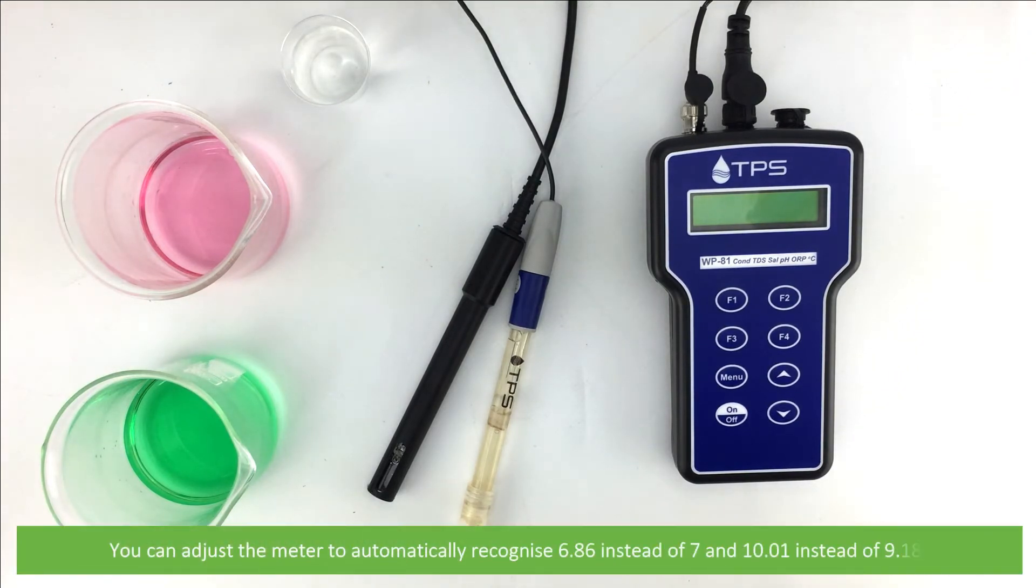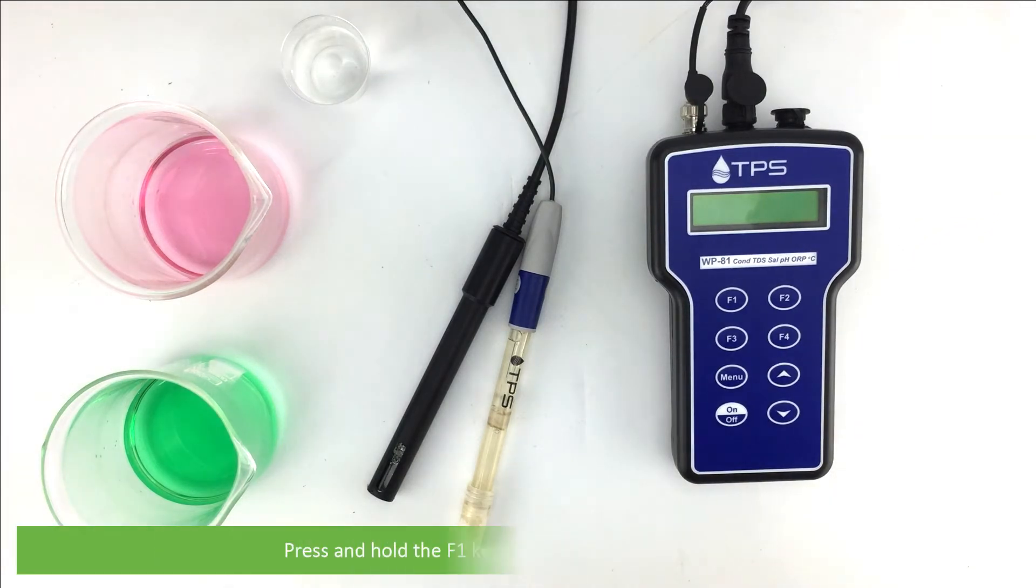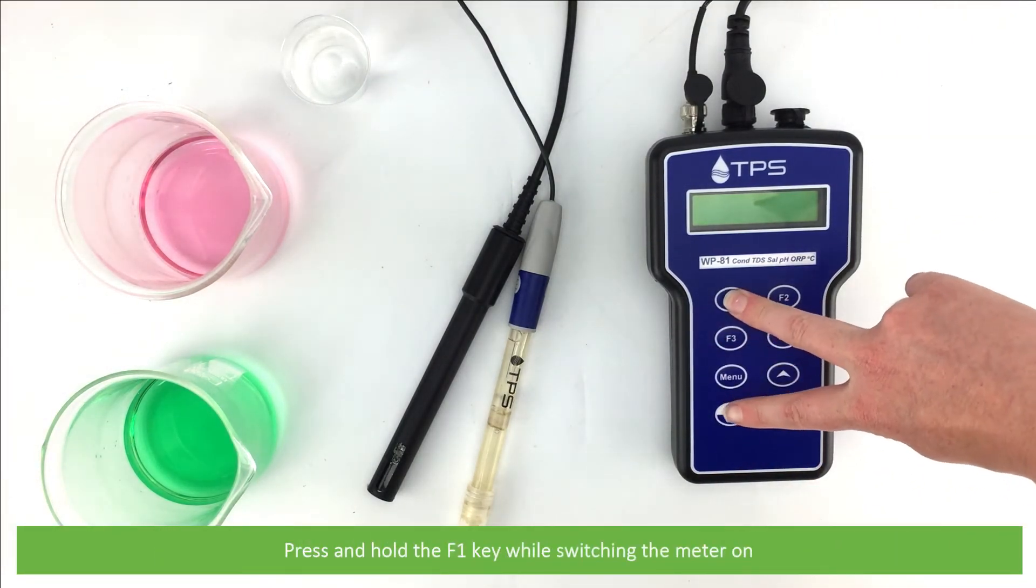You can adjust the meter to automatically recognize 6.86 instead of 7 and 10.01 instead of 9.18. To adjust, start with the meter off. Press and hold the F1 key while switching the meter on.